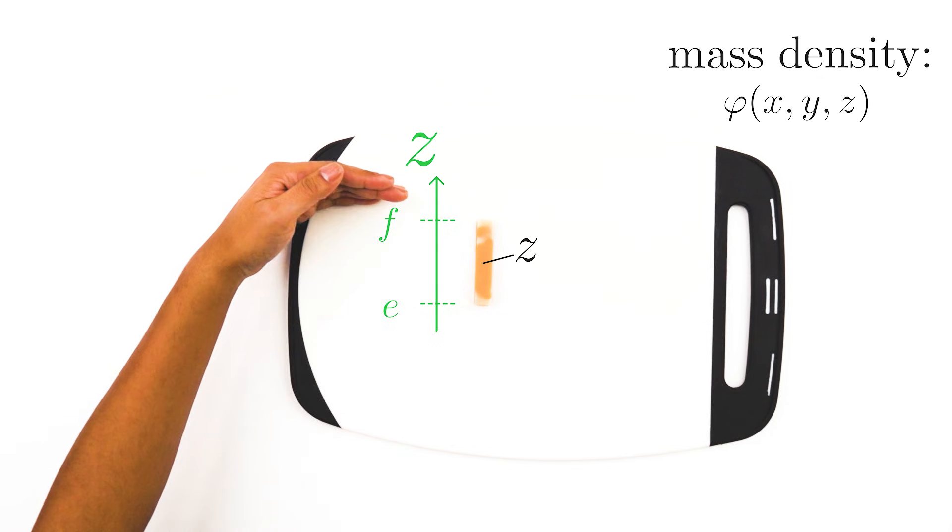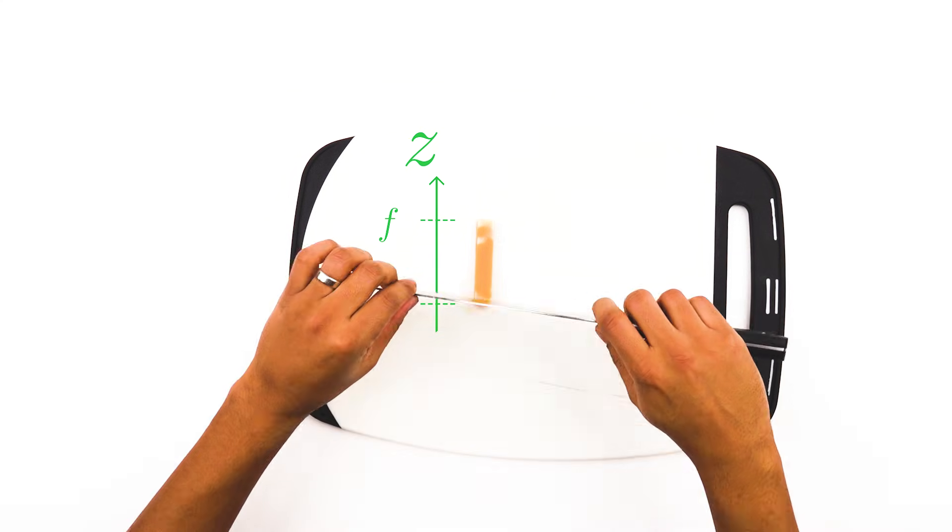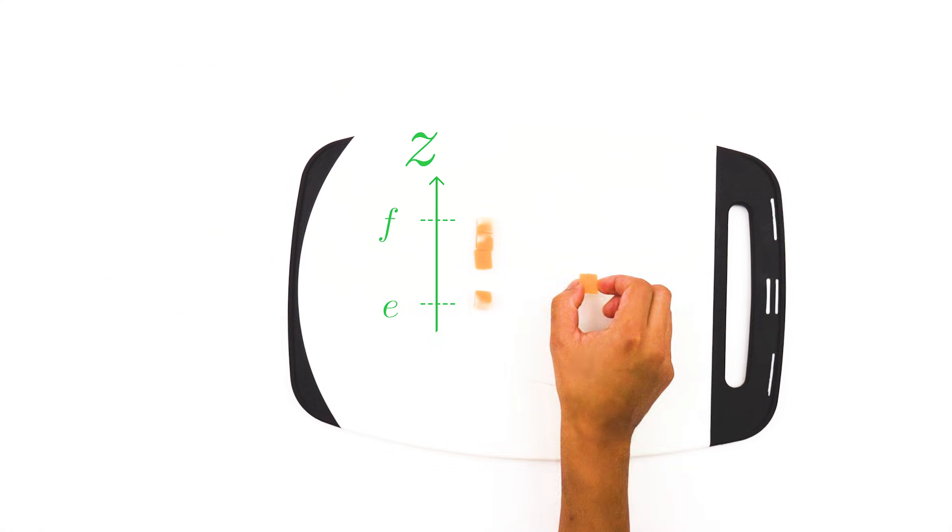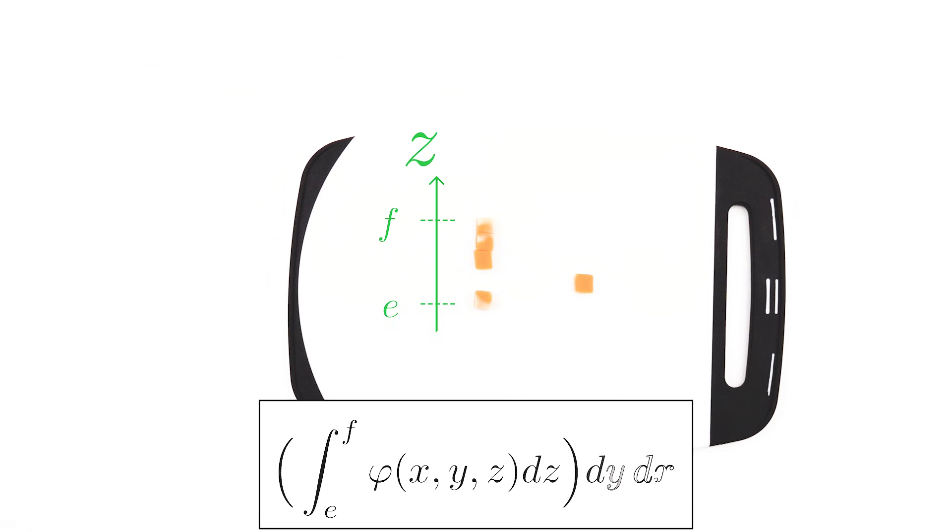This corresponds to chopping up the slice in many small pieces with infinitesimal length, dz. This piece of the x, y slice has density phi of x, y, z, height dz, length dy, and width dx. So, its infinitesimal mass is phi of x, y, z, dz, dy, dx. Totaling up the contribution of these little cubes, I must integrate along the z-axis to get the integral from e to f of phi of x, y, z, dz times dy, dx. This expression corresponds to the infinitesimal mass of our fixed x, y slice. Notice the inner integral dz corresponds precisely to the newest assumption in Fubini's theorem. You can interpret this integral as the density of the x, y slice itself.